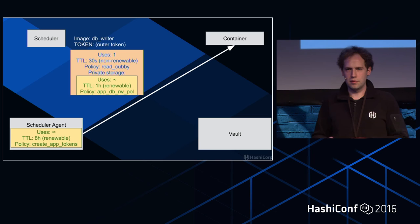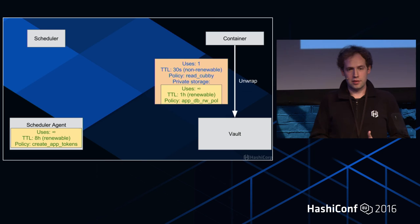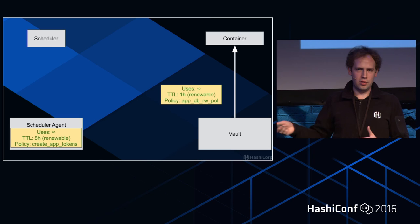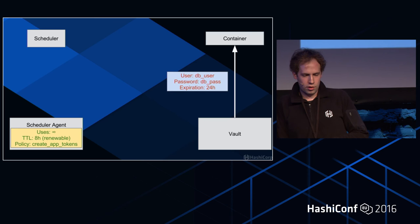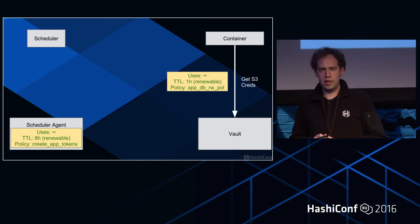The container then calls Vault and says 'I'm going to unwrap this.' Vault reads the value out of the cubbyhole and returns it. Now the container has a token — that's a secure introduction. The container can then say 'I'm going to get DB creds,' or get user password expiration, or get S3 credentials, or get a TLS certificate.